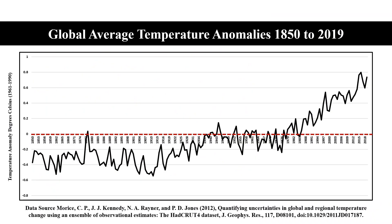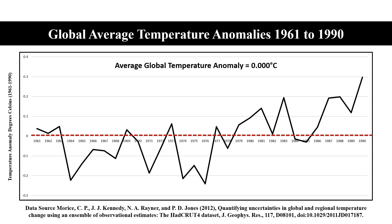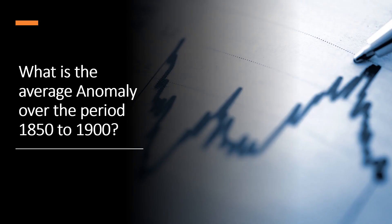This is the graph for the full period 1850 to 2019. The HadCRUT4 dataset holds data that is anomalous to the period 1961 to 1990. We have adopted the convention of showing that period with a red dotted line. For clarity, that means the average anomaly for 1961 to 1990 is by definition and in fact equal to zero.